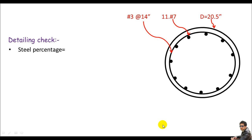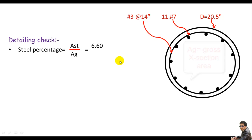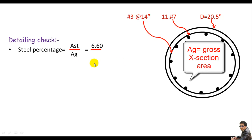Now let me do the detailing checks. First, check the steel percentage. Per ACI 318 it must be between 1% and 8%. Steel % = Ast / Ag = 6.60 / 330 = 0.02, which is 2%. Since 2% is between 1% and 8%, we are okay.